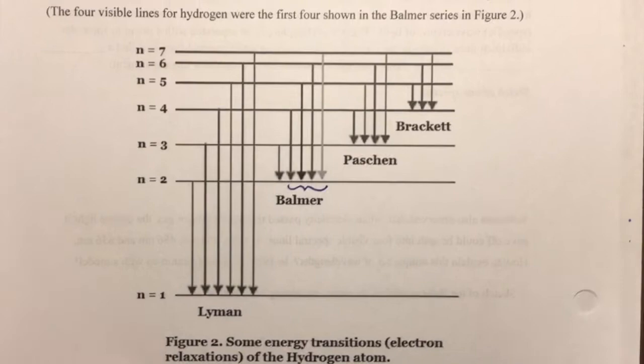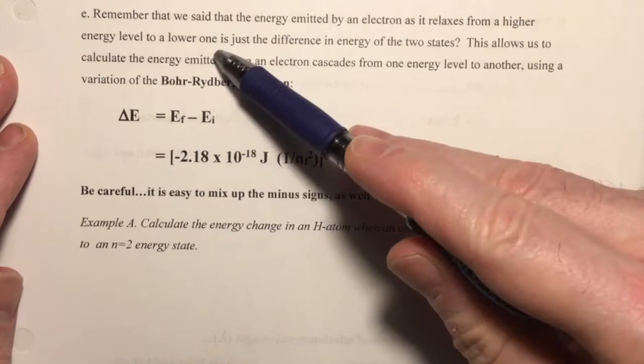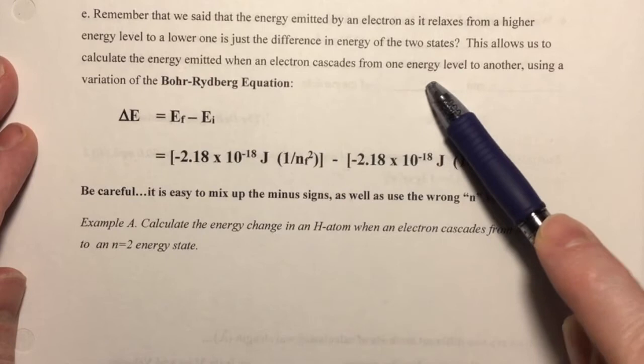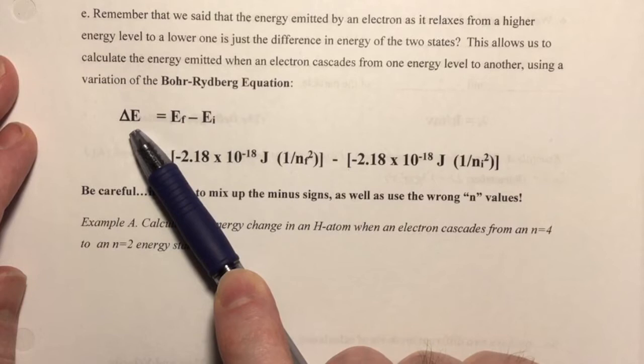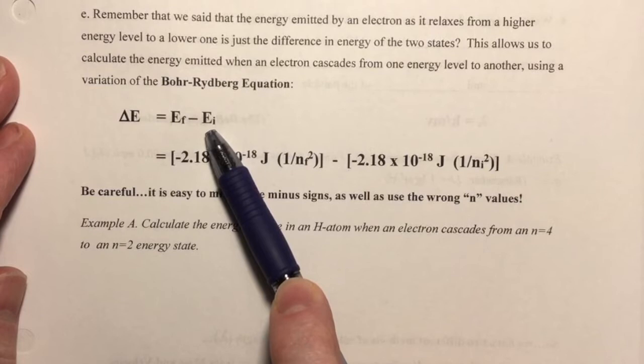Remember that energy emitted by an electron as it relaxes from a higher energy level to a lower energy level is just the difference in energy of those two states. This allows us to calculate the energy emitted when an electron cascades, using a variation of the Bohr-Rydberg equation. The delta energy — the change in energy between two electron states — is simply the energy of the electron in its final state after it's relaxed, minus the energy of the electron in its initial state before it has relaxed.